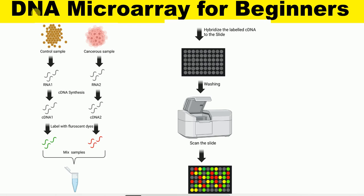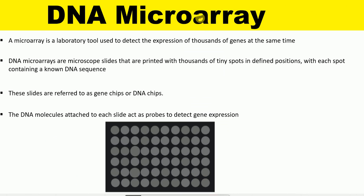In this lecture, I'm going to talk about DNA microarray for beginners. A microarray is a laboratory tool used to detect the expression of thousands of genes at the same time. DNA microarrays are microscope slides printed with thousands of tiny spots in defined positions, with each spot containing a known DNA sequence. These slides are also referred to as gene chips or DNA chips. The DNA molecules attached to each slide act as probes to detect gene expression.